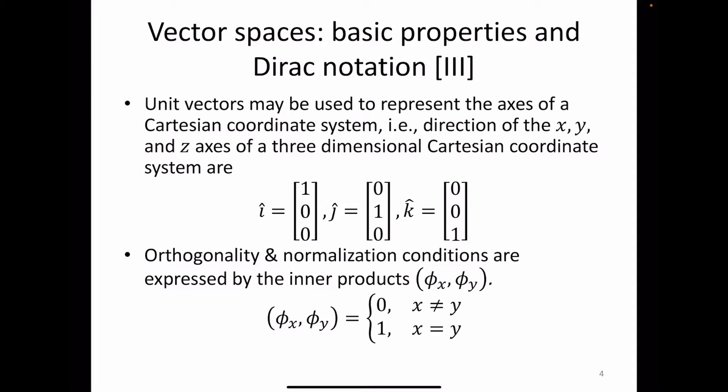Unit vectors may be used to represent the axes of a Cartesian coordinate system — for example, the x, y, and z axes of a three-dimensional Cartesian coordinate system. Any linear combination of these three can be used to express any point in that coordinate system. Orthogonality and normalization conditions are met and expressed by the inner products: any time you take the inner product of a vector with a different vector the result is 0, and with itself the result is 1.